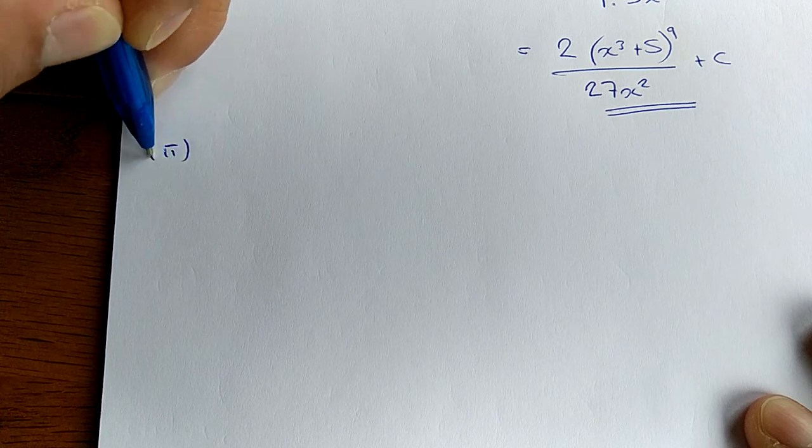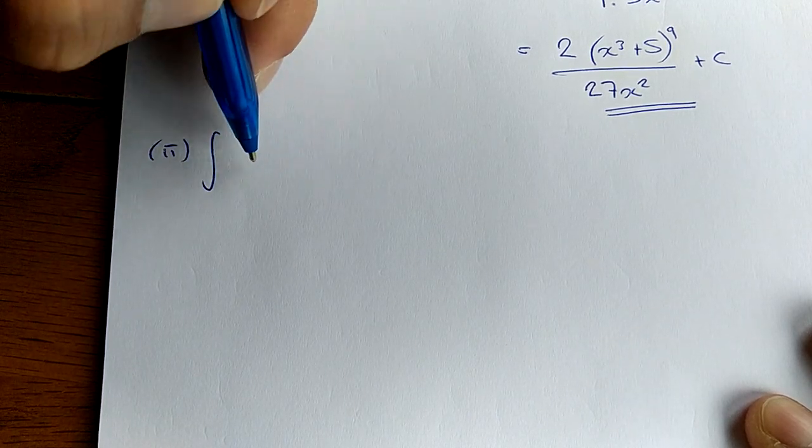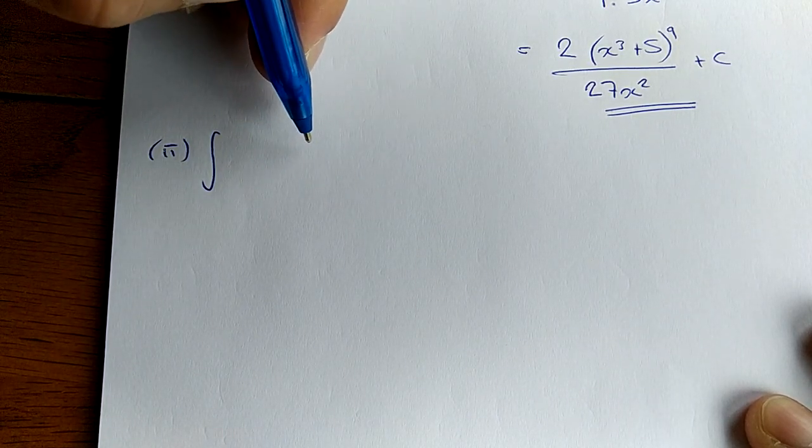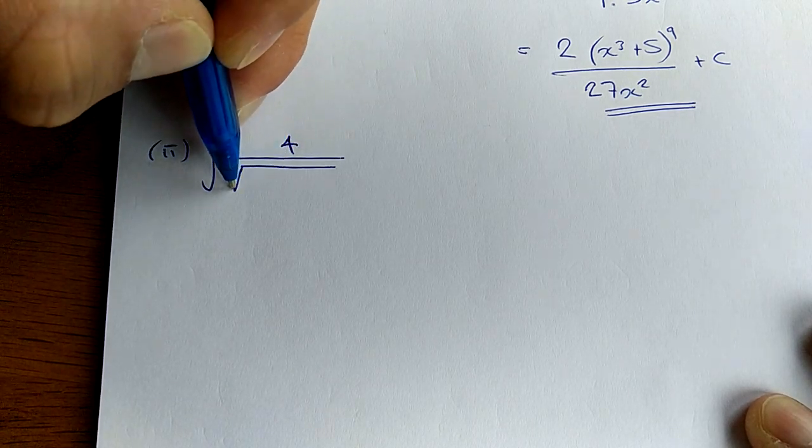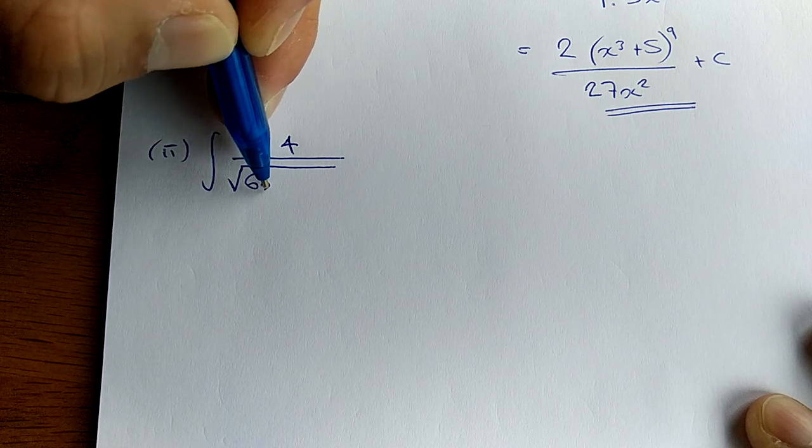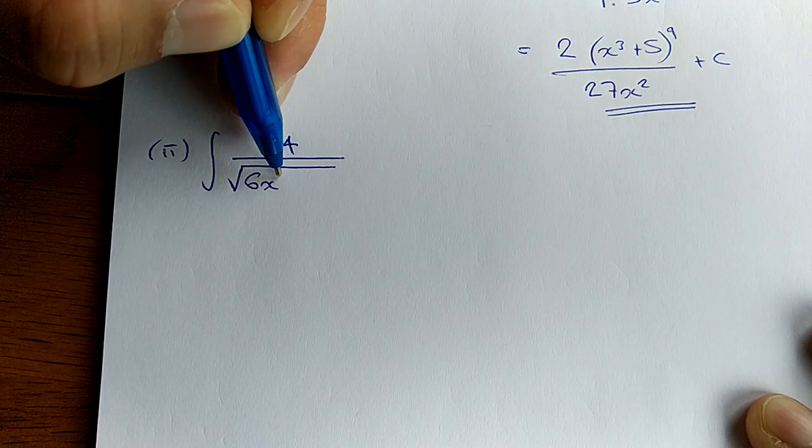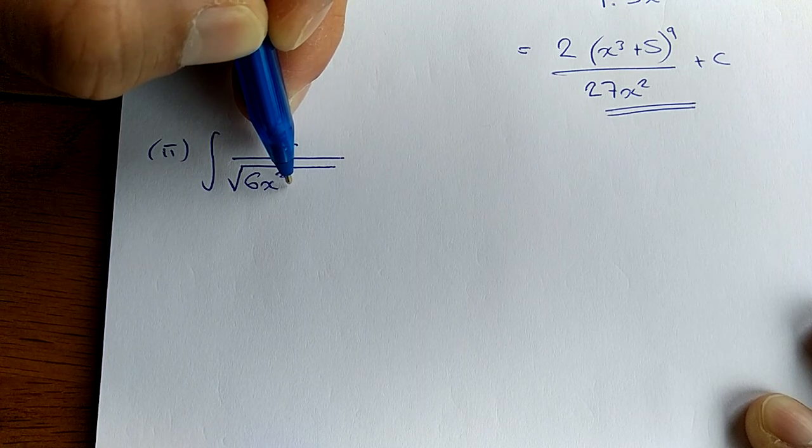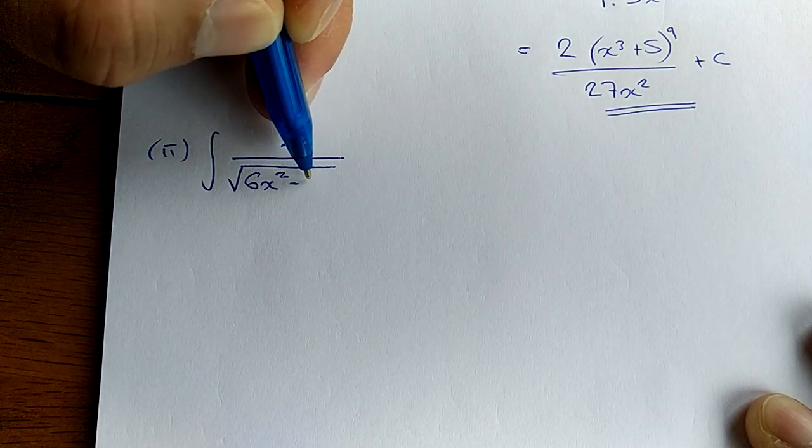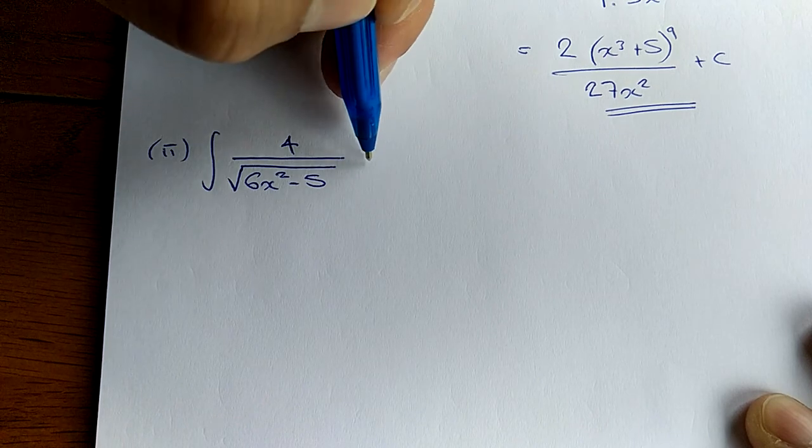Let me pick another one. Let's do a fractional one, shall we? Let's do 4 over the square root of 6x squared, plus, no, let's make it a negative, negative 5, dx.